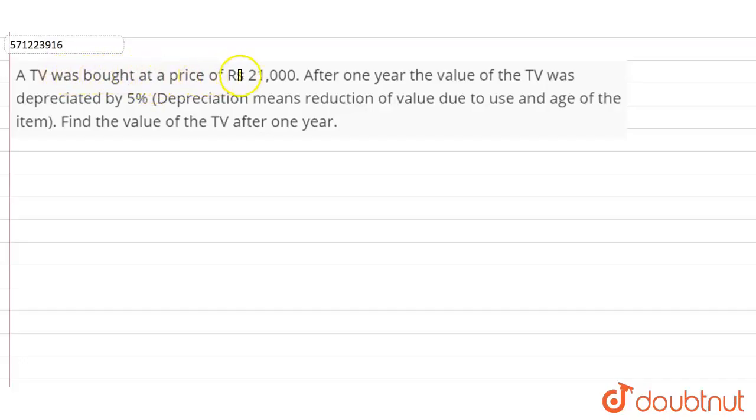A TV was bought at a price of rupees 21,000. After one year, the value of the TV was depreciated by 5%. Depreciation means reduction of value due to use and age of the item. Find the value of the TV after one year.